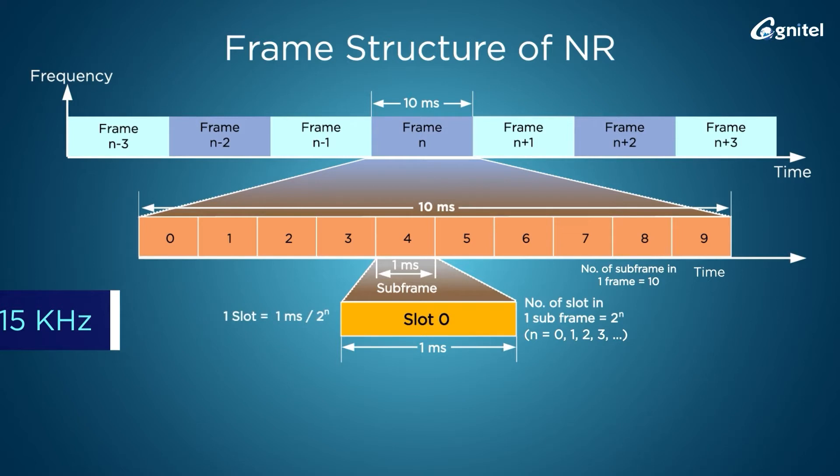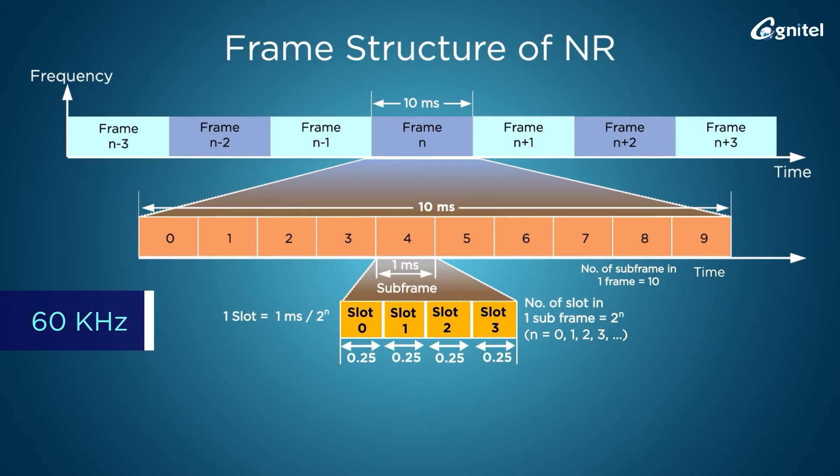For 15 kilohertz subcarrier spacing, the slot duration is the same as the subframe duration of 1 millisecond. For 30 kilohertz, slot duration becomes 0.5 milliseconds, so two slots get fitted into one subframe.